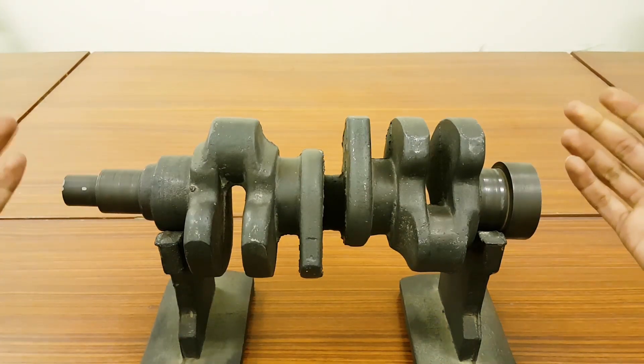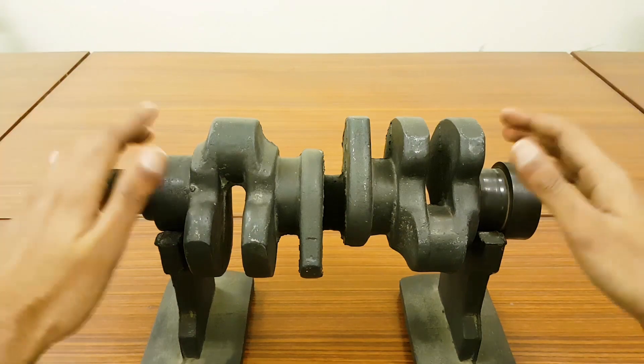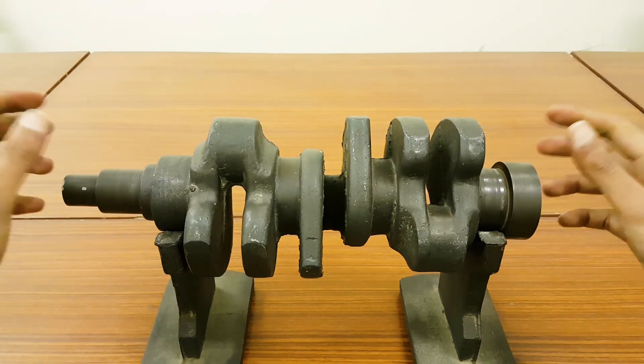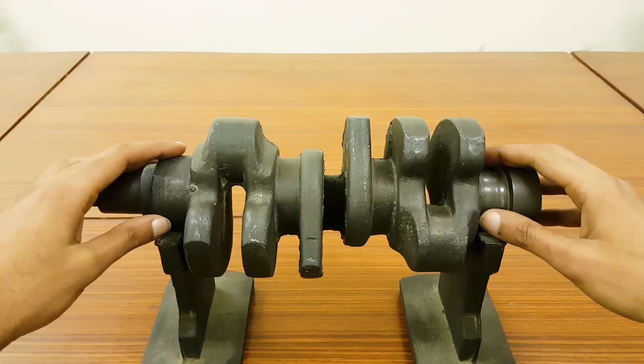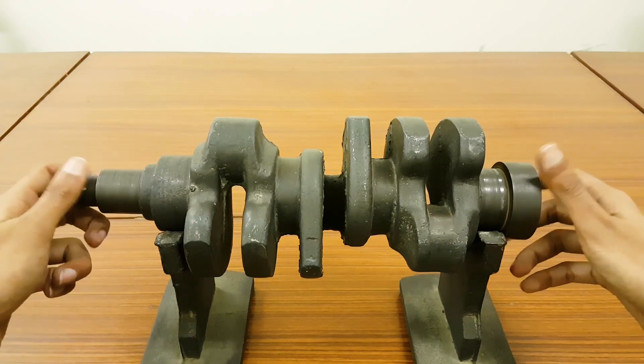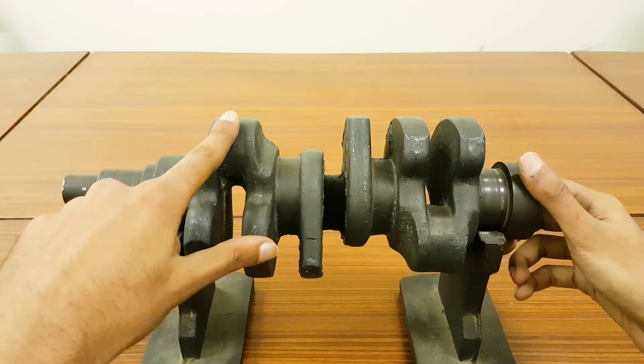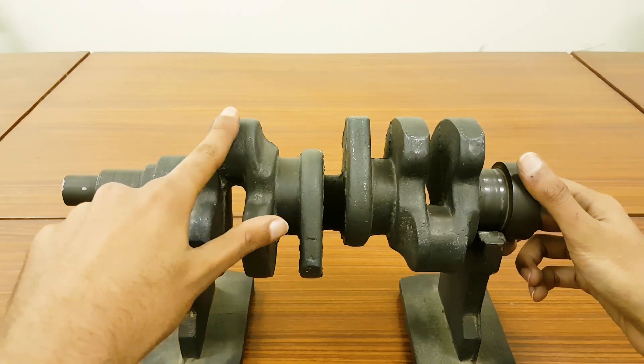These four main journals help this crankshaft hold inside the engine block by means of main shell bearings or half sleeve bearings. These off-center pins are known as crank pins.